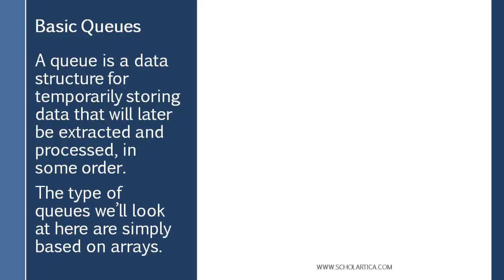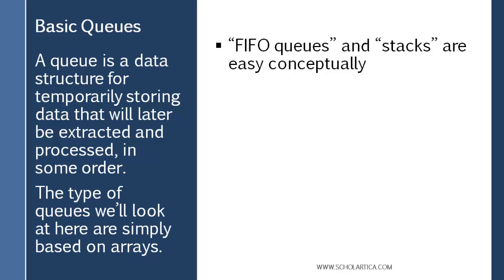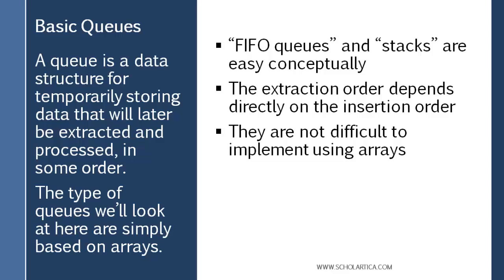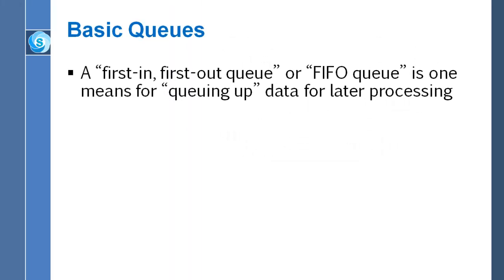We're going to implement these queues using arrays — they're essentially just arrays, but the way in which we use the array is what turns them into queues. The two types of queues we'll look at are known as FIFO queues and stacks. These are the most common names for these types of queues. FIFO stands for first in, first out.